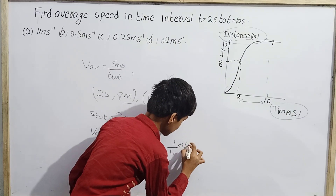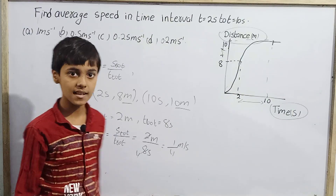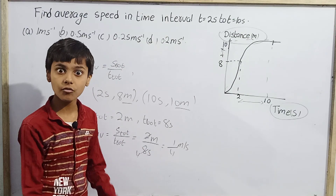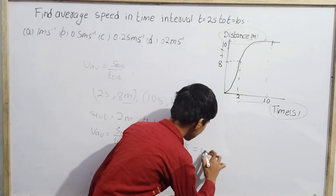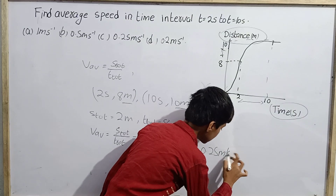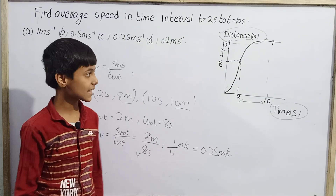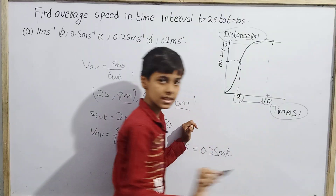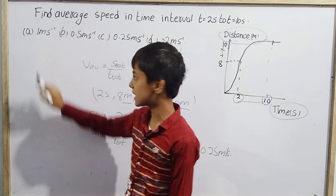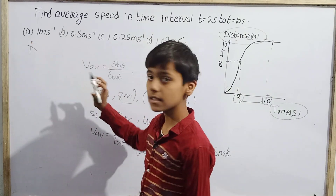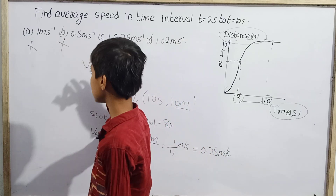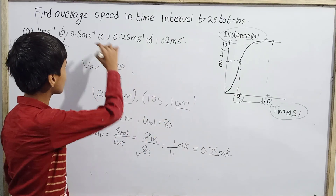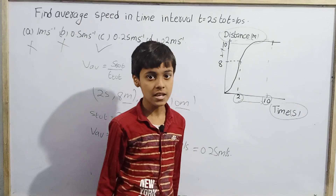This gives 1/4 meter per second, which equals 0.25 m/s. Checking the options: option A (1 m/s) is wrong, option B (0.5 m/s) is wrong, option C (0.25 m/s) matches our answer and is correct, and option D (0.2 m/s) is also wrong.